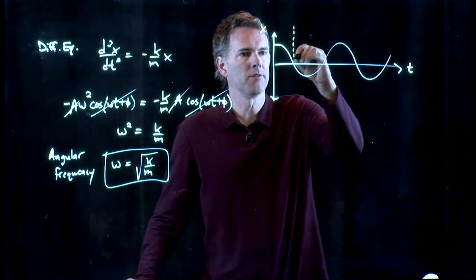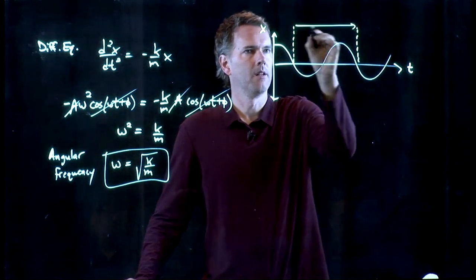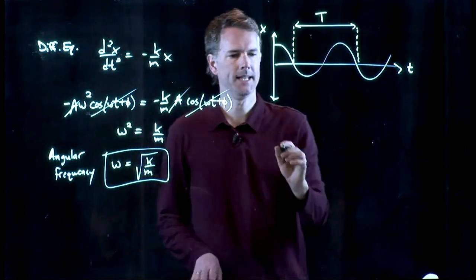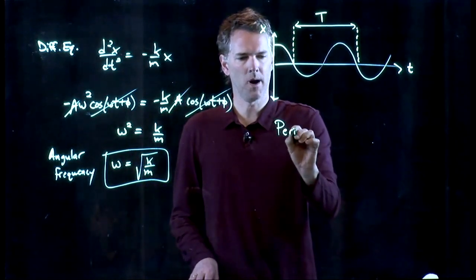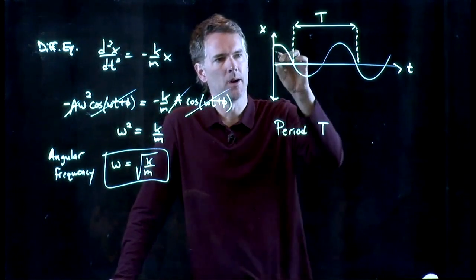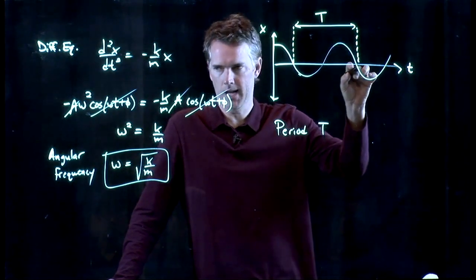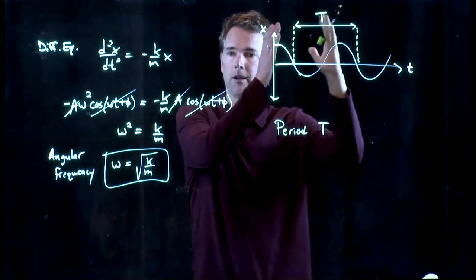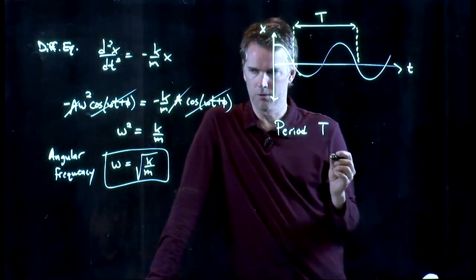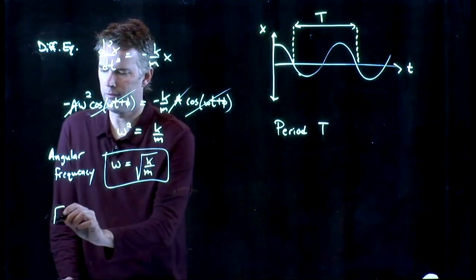This region from there to there has a very characteristic name. It is called the period T, and that's where the function is going to start repeating itself. We went down through zero, we came back up, and then we went down through zero again. And so that amount of time is the period, and the period is of course related to things like the frequency.